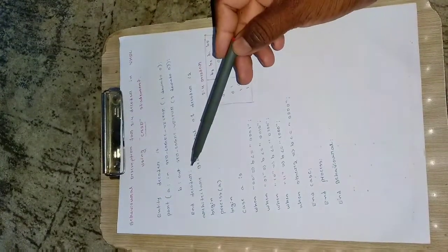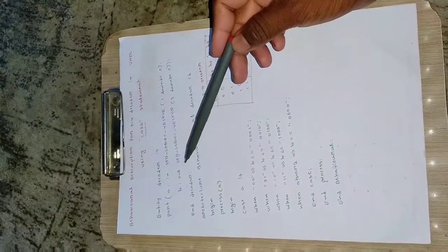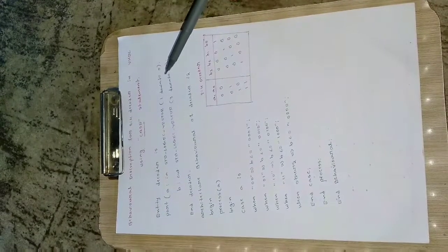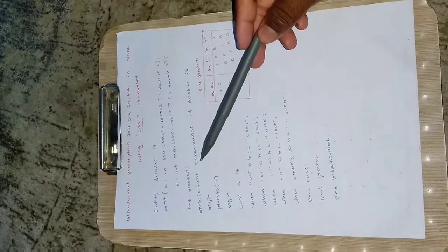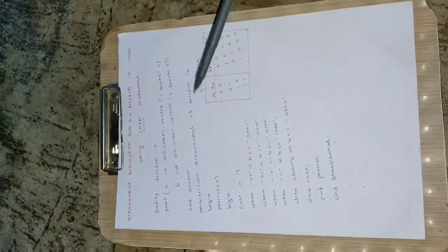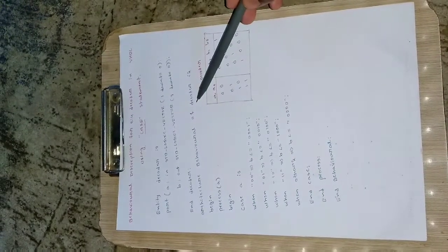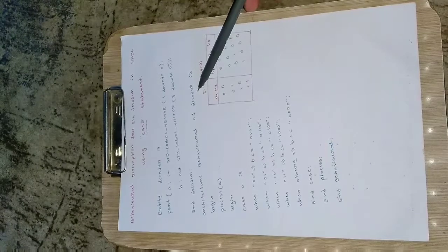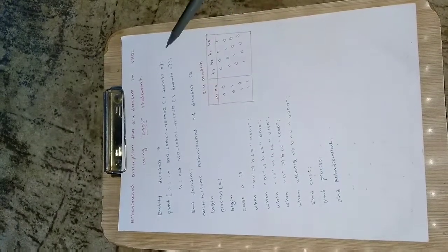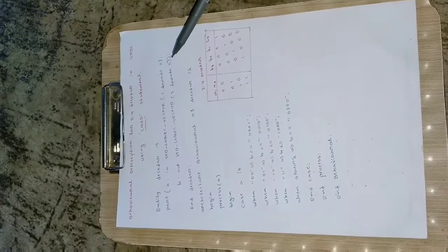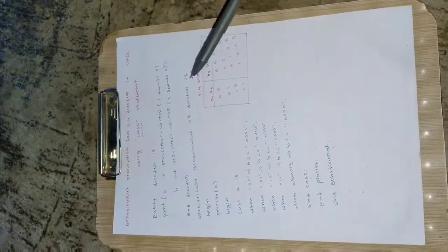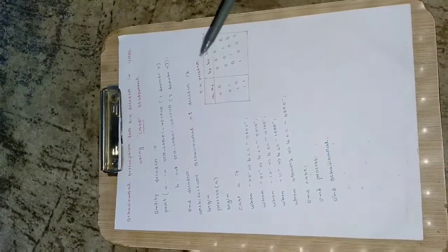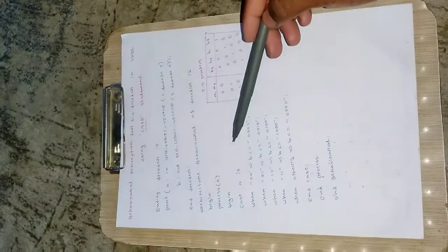And then end this decoder entity here. Then once you define the entity then call that entity. Architecture behavioral of decoder is. Here you should be calling with the same name what you have defined. If you change this name then it will throw an error saying that the entity is not defined or the variable is not defined. So make sure that you are using the same name. Then begin for this behavioral module.